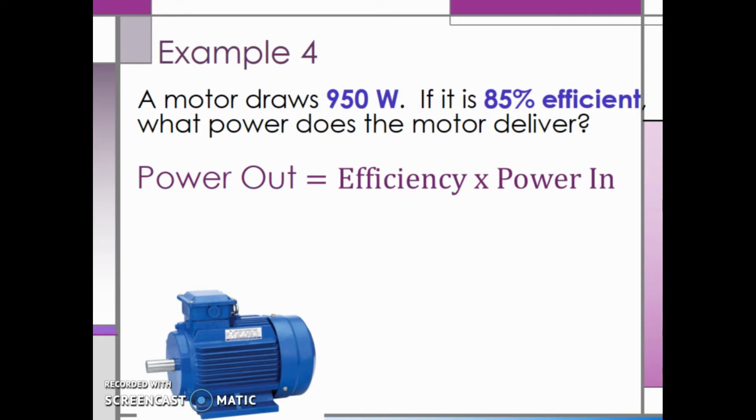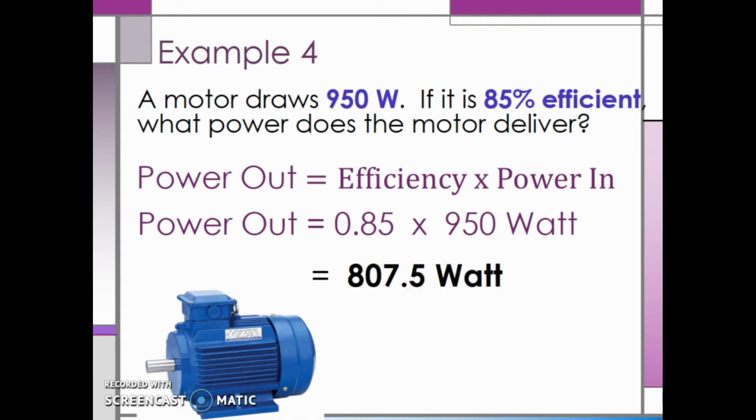We can then substitute in 0.85 for our efficiency in decimal form, and 950 watts for the power in. This gives us an output power of roughly 807.5 or 808 watts.